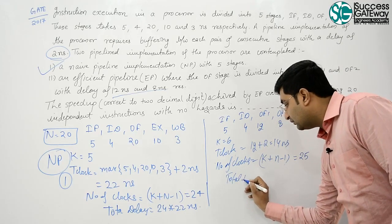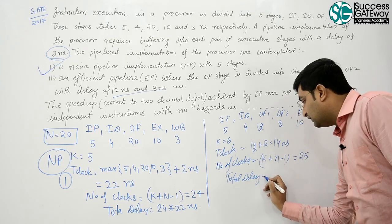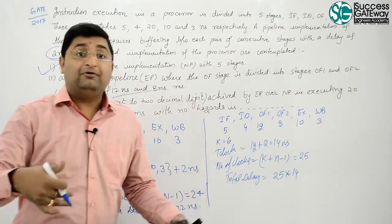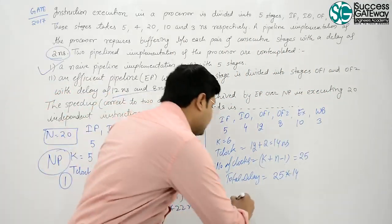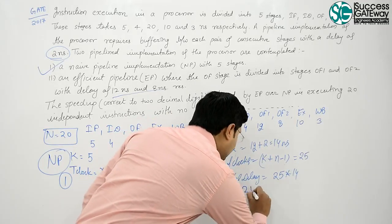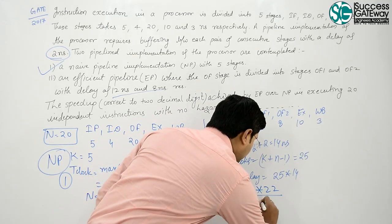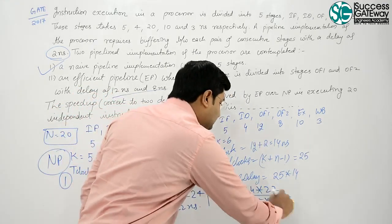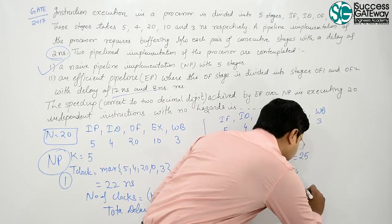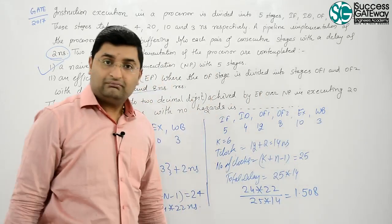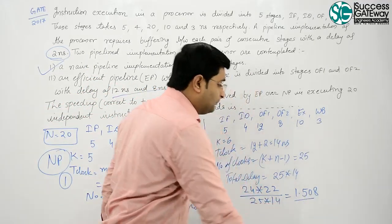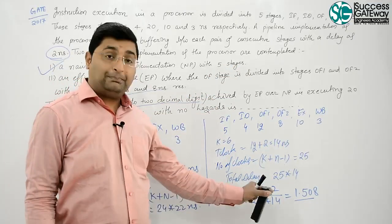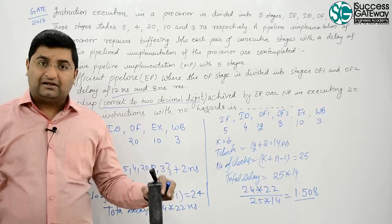Total delay is 25 into 14. Now, how much speedup you achieved? That is 24 into 22 upon 25 into 14. When you divide this, you will get 1.508. Your answer is 1.50 correct to 2 decimal digits.